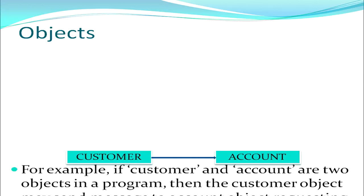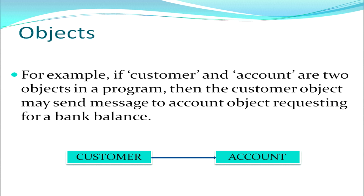As you can see in this figure, customer and account are shown as two objects. The customer object may send a message to the accounts object requesting a bank balance. But a customer is an independent object having its own features like customer ID, customer name, and customer address. Similarly, account is another object maintaining minimum balance, daily withdrawals, or deposits. These two objects can work independently yet can send messages to each other requesting particular data.